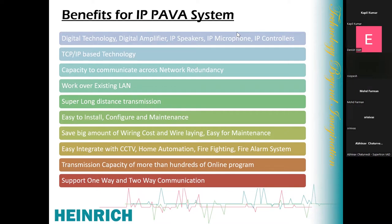There is no limitation of zones in our IP PA system. You can create any number of zones and any number of devices. It is not like you can only create 100 or 200 zones — you can create as many zones as needed. You simply add control modules, amplifiers, or speakers over the network, and you can expand your system as much as required.